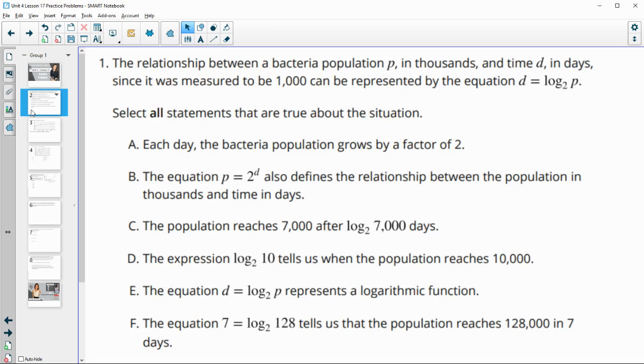Number one gives us a relationship between a bacteria population that's in thousands and the time in days since it was measured to be a thousand can be represented by this equation right here. A couple of things to keep in mind here is that the bacteria population is in thousands and the time is in days. It says select all equations that are true about this situation.